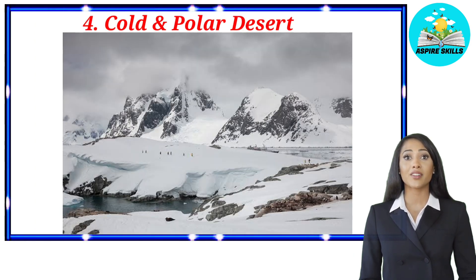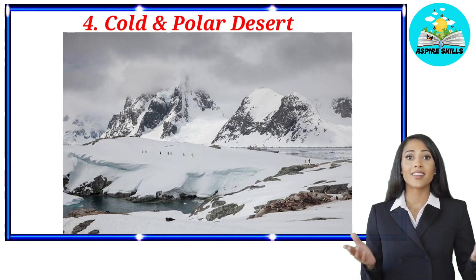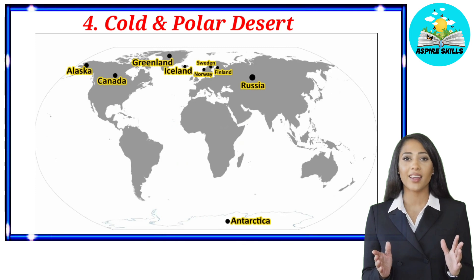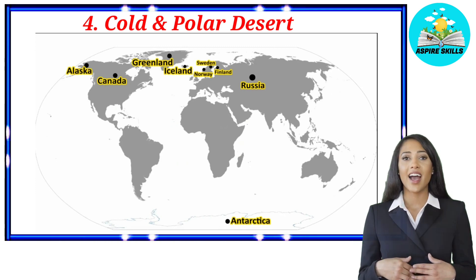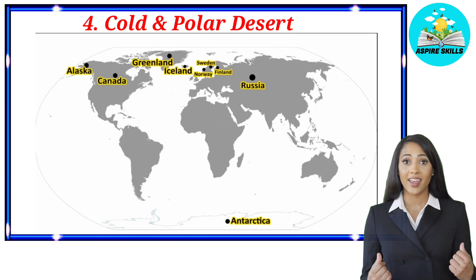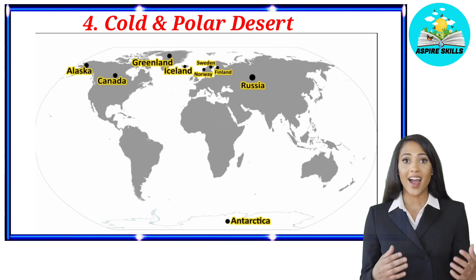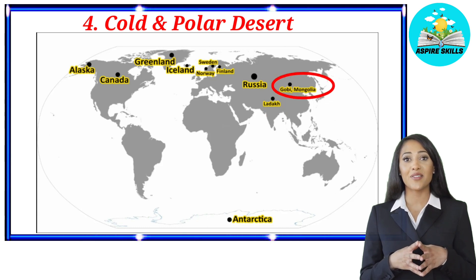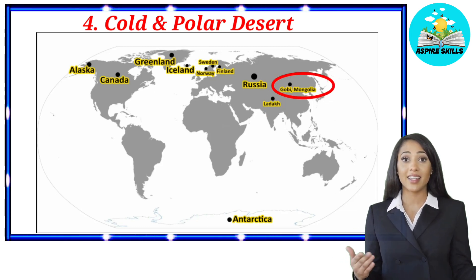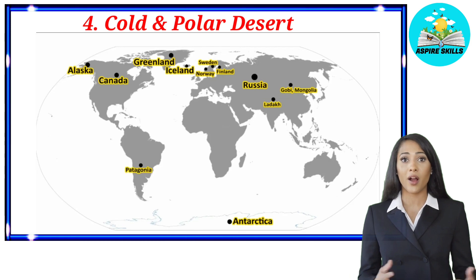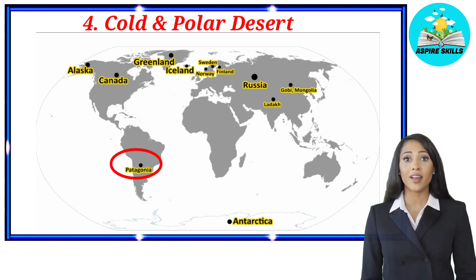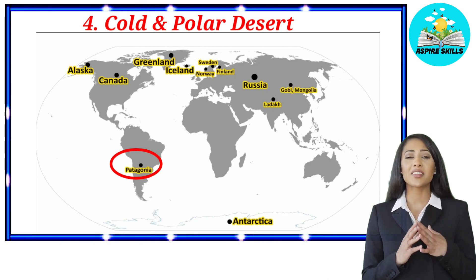Finally, we have the fourth type — cold and polar deserts. Examples of polar deserts are Antarctica, Alaska, Canada, Greenland, Iceland, Norway, Sweden, Finland, and Russia. In India, we have Ladakh, which is a cold desert. Mongolia's Gobi Desert is also a cold desert, but it is also a rain shadow desert. The Patagonian Desert in Argentina is also a cold desert, found in temperate regions at higher latitudes and located at the center of the continent.